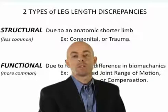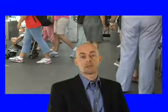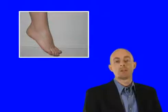The second type is functional, which is usually due to a neuromuscular imbalance or a compensation. Functional leg length discrepancies are far more common than structural. With functional leg length discrepancy, the bones and joints may not measure shorter, but there's an imbalance due to a muscle contraction or compensation — for example, a unilateral plantar flexed foot.